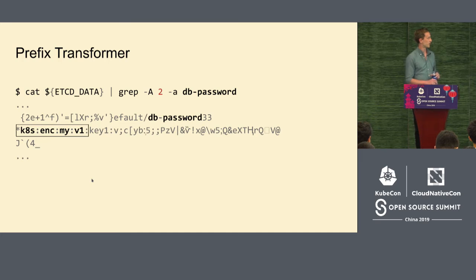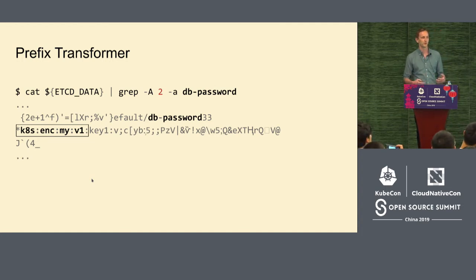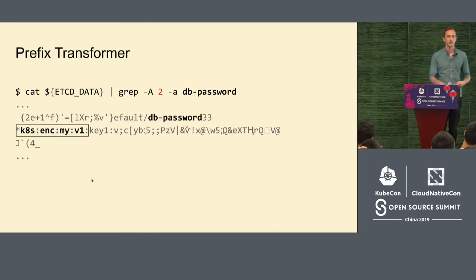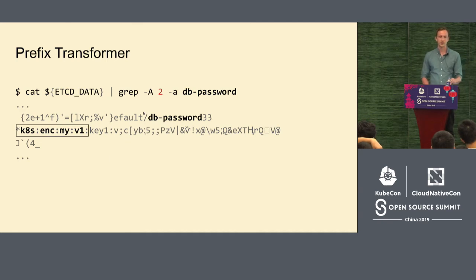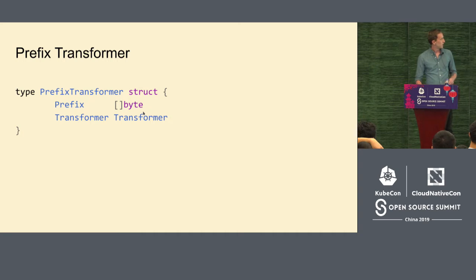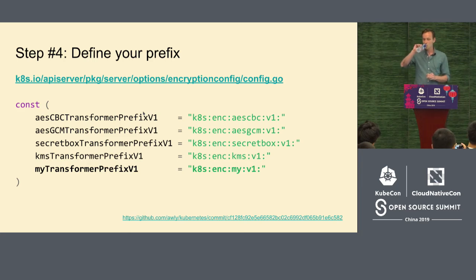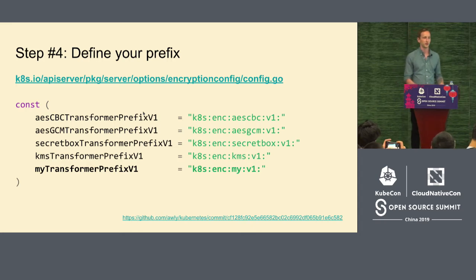Step three: you have your configuration, now you need to register it as a possible transformer in the encryption configuration YAML. You just add it to an existing struct at the end in the same two files. Next, I need to explain what prefix transformers are. Prefix transformers exist to avoid conflicts between multiple transformers. When a prefix transformer writes data to etcd, it prepends a static prefix to the data. When it reads it back, it checks the prefix and strips it — if the prefix doesn't match, instead of returning corrupt data it throws an error.